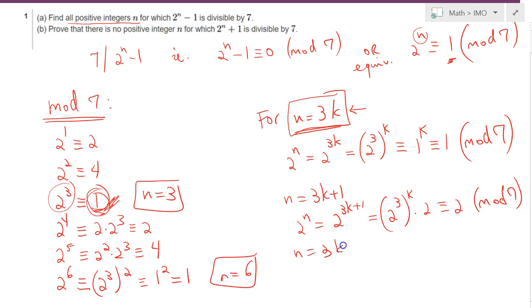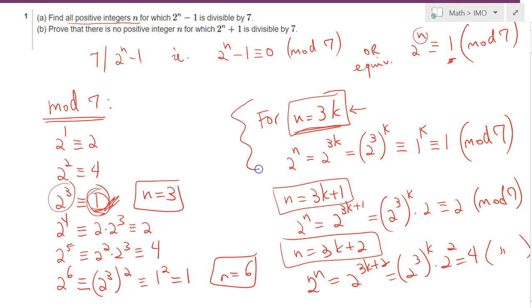And finally, if n is in the form 3k plus 2, then 2 to the power n is 2 to the power 3k plus 2, which is 2 cubed to the k power times 2 squared, which is just 4 in mod 7. As a result, when n is in this form or that form, we do not have the desired result.